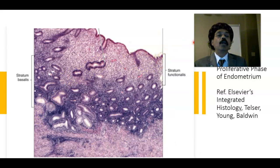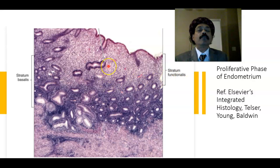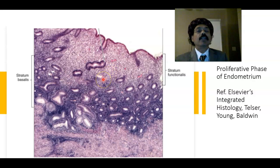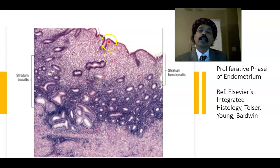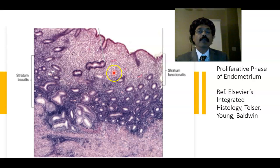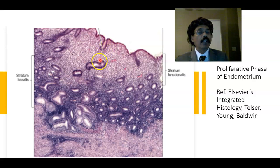This is the proliferative phase of the endometrium. We have three phases: the proliferative phase, the secretory phase, and the premenstrual and menstrual phase. In the proliferative phase, we see simple columnar epithelium, stroma — which is loose connective tissue containing cells, ground substance, fibers, and blood vessels. These are the uterine glands, which are tubular in the upper part and may show some branching in the lower part.